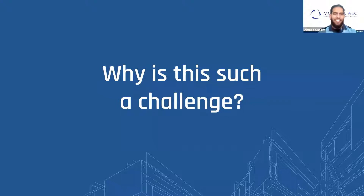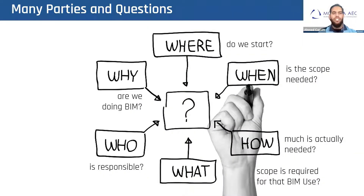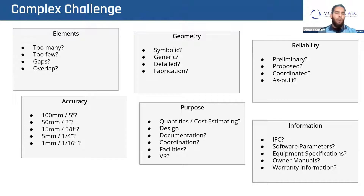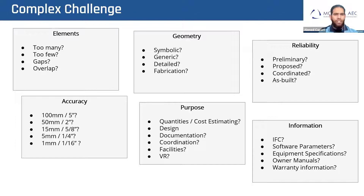Why is this such a challenge? Sometimes we just need to start with some basic questions: who, what, where, when, why, and how — and answer them across the many parties involved. It's a complex challenge, as we need to define different aspects of the contract: which elements we need, how much geometry, how reliable it needs to be, the level of accuracy, what the purpose is, and what information is needed. Each of these six categories has a level of depth to them as well.